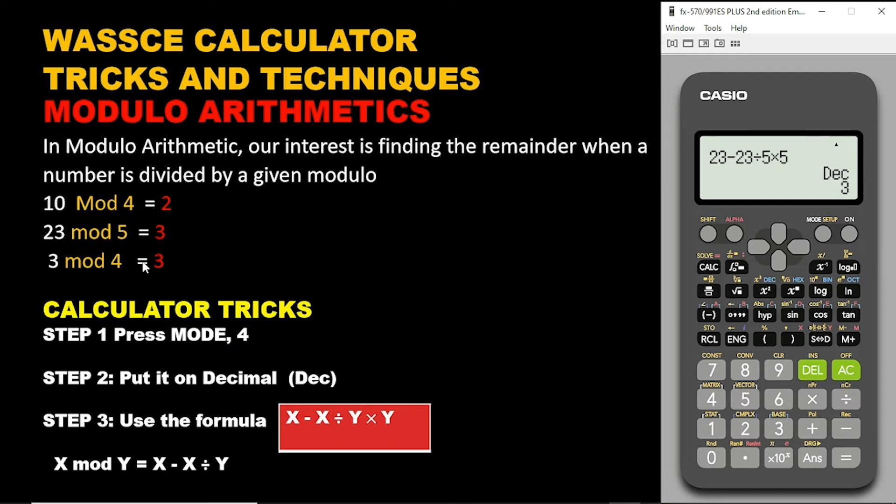Again, let's use the same concept for this. Remember in school, you were taught that when the modulo is bigger than the number, the answer is the number. So here, 4 divided by 3, obviously the number is 3 and then the modulo is 4. So the modulo is bigger than the number. Let's see if we can get to the same answer. So the x is 3 and then the y is 4. So we have 3 minus 3, then you divide that by 4 times 4. Bam, that is 3.